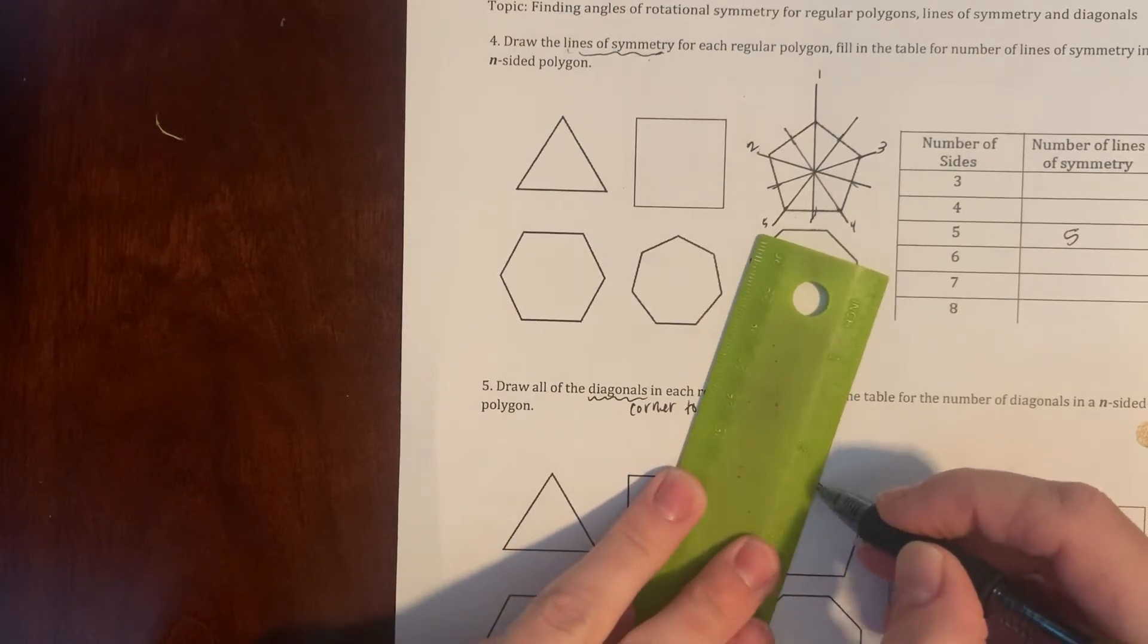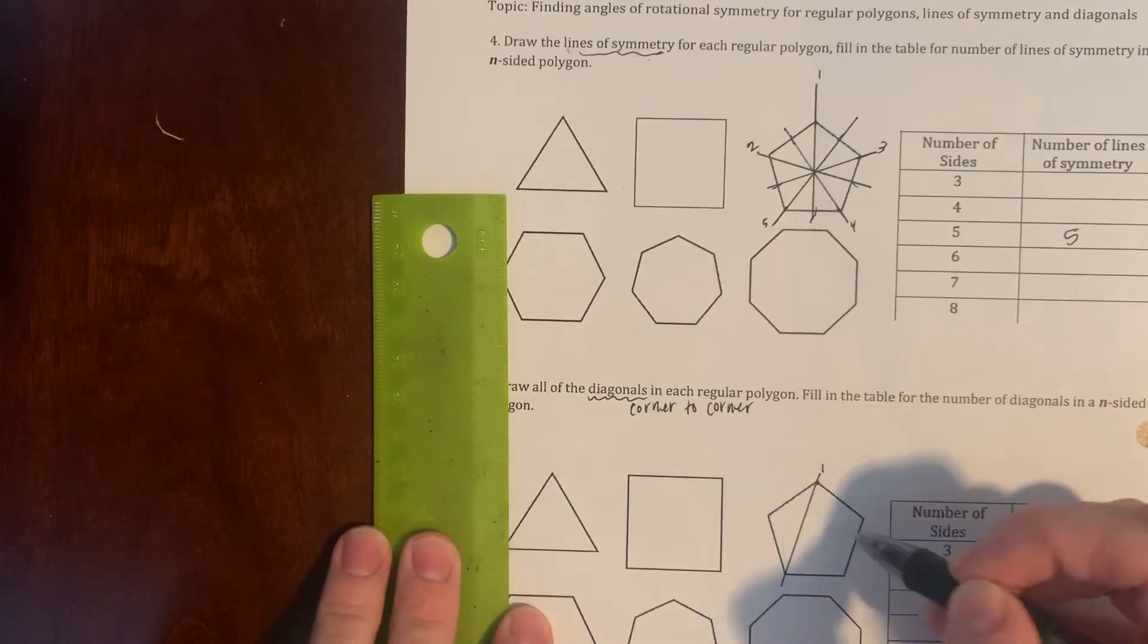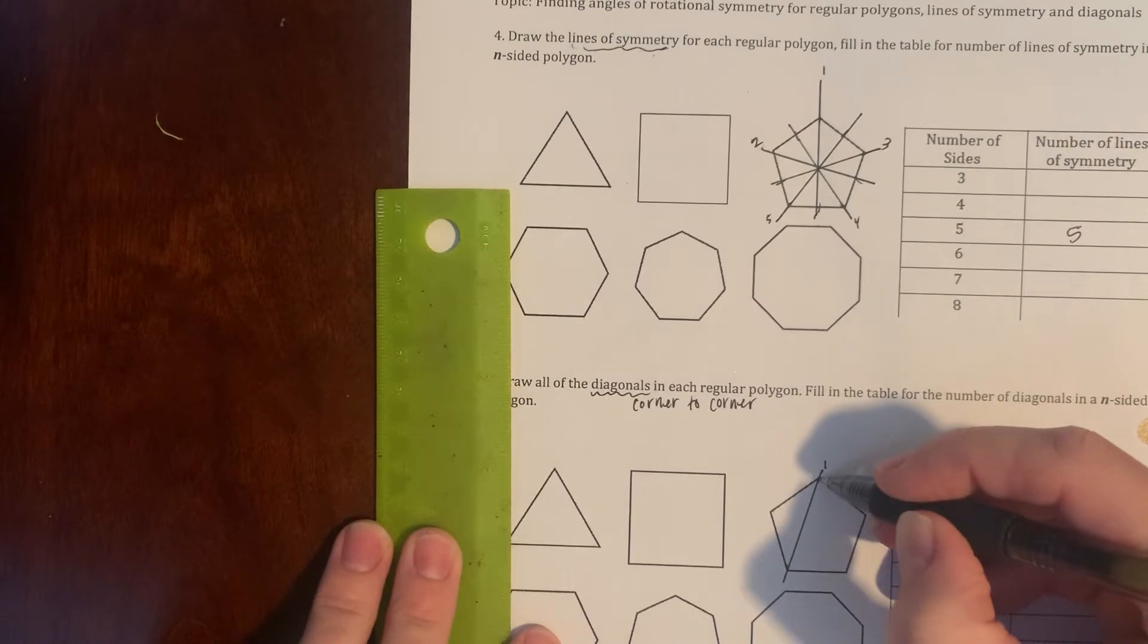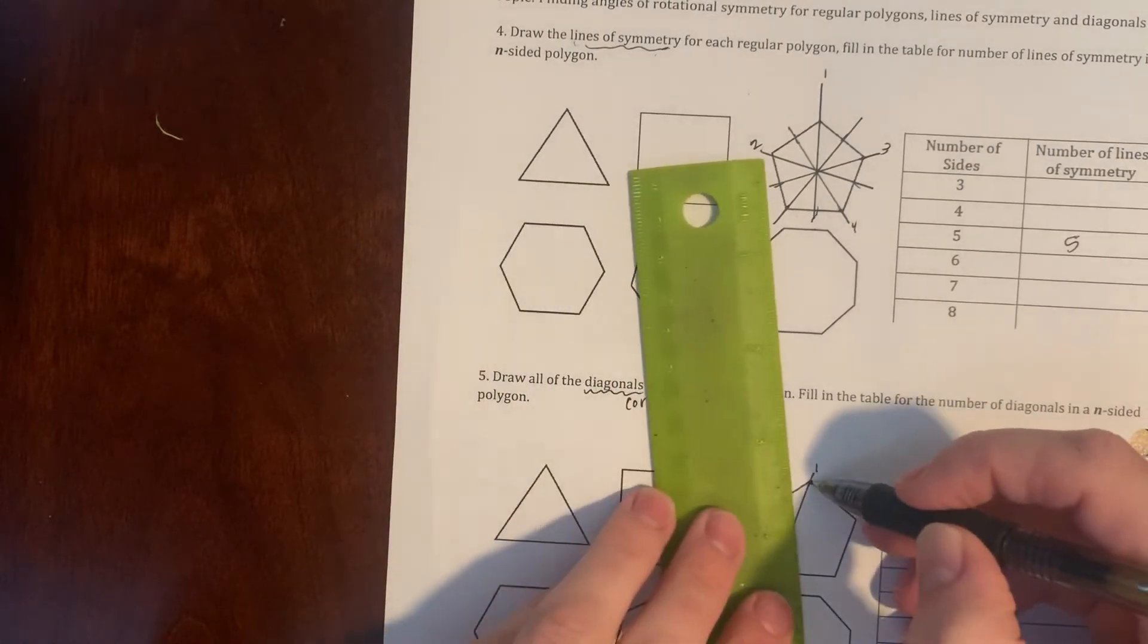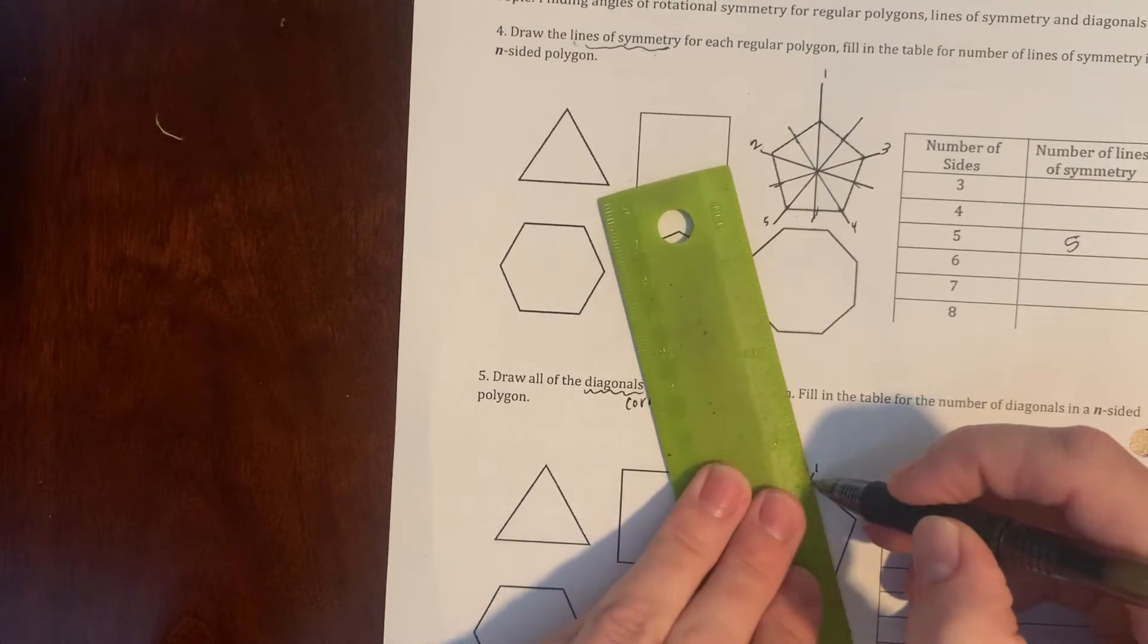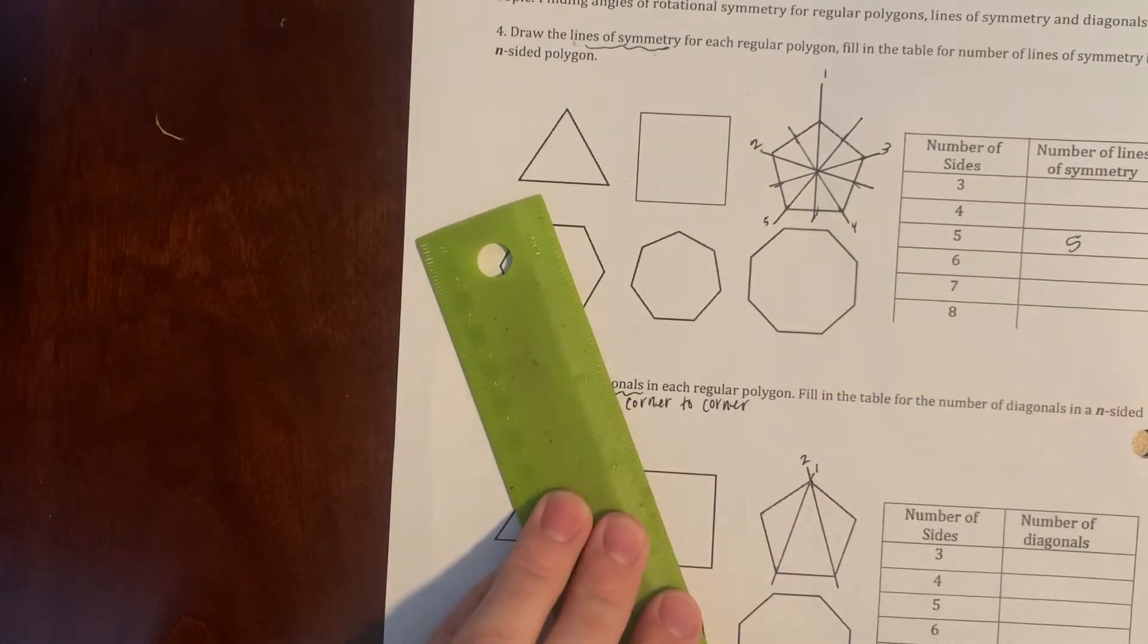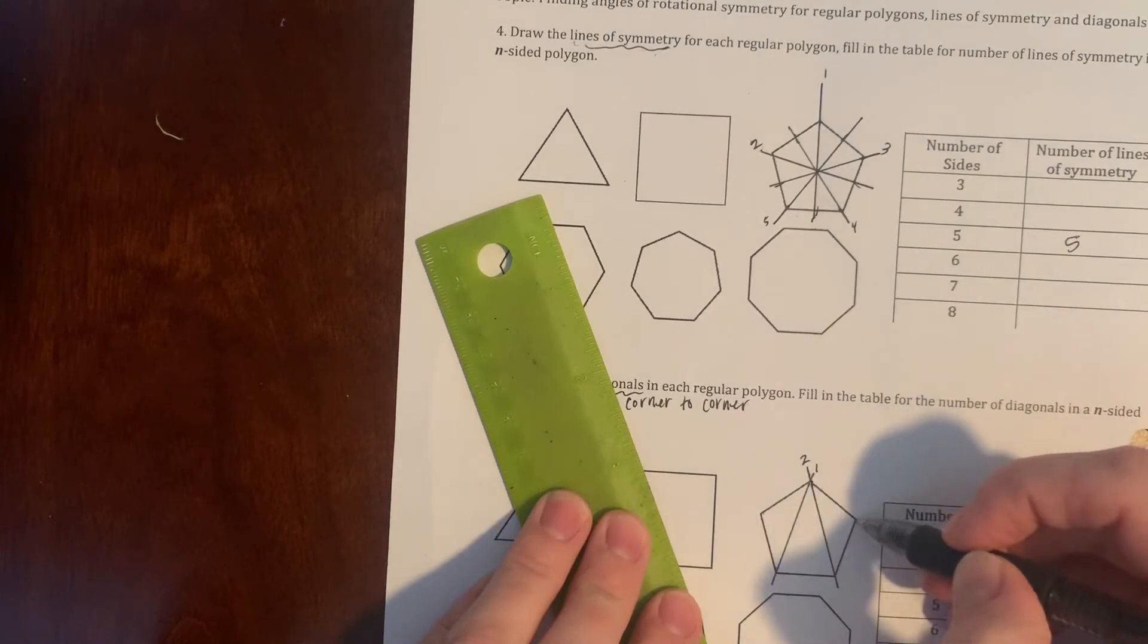So notice it's not a line of symmetry. I'm just connecting my corners. So I'm going to go from here to here now. So I'm already at two, and then if I go from here to here, I'm on the edge of the polygon so that doesn't count.